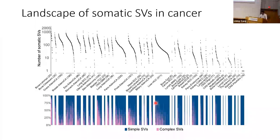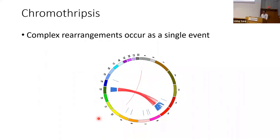Breaking down the contribution of complex SVs versus simple SVs, in each block you notice that on the left side there is an enrichment of complex SVs. That means if a tumor has lots of SVs, they tend to be contributed by these abundant complex SVs.